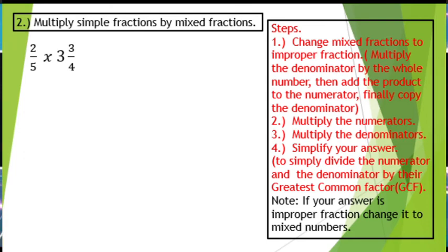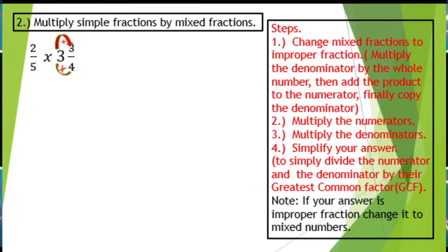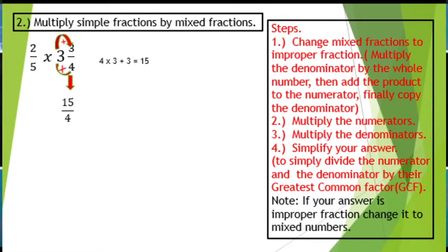Let us consider this. We have 2 over 5 times 3 and 3 over 4. To multiply simple fractions by mixed numbers, we need to first change the mixed fraction into an improper fraction. To do that, we simply multiply the denominator by the whole number and add the product to the numerator. So, we have 4 times 3 is 12, plus 3 equals 15. 15 will be the numerator while 4 will be the denominator — just copy the denominator.